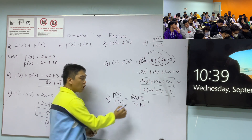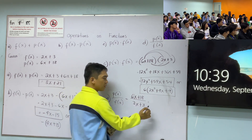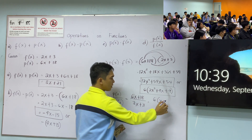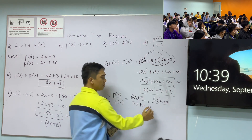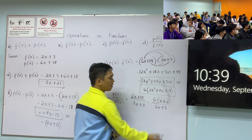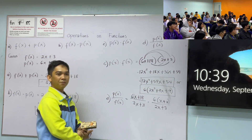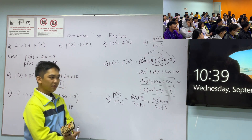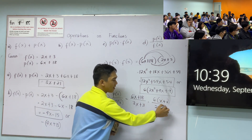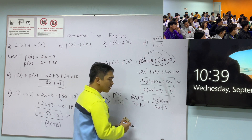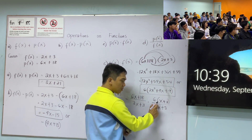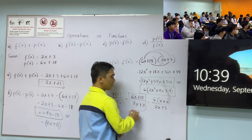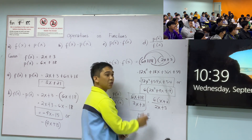So what do we do? Factor out the common factor of the numerator. The common factor of 6x + 18 is 6, giving us 6(x + 3) over (2x + 3). Can we cancel now? No — there are no matching whole factors between numerator and denominator. Without matching parenthesized binomials, this expression is already prime. So the final answer is 6(x + 3) over (2x + 3).